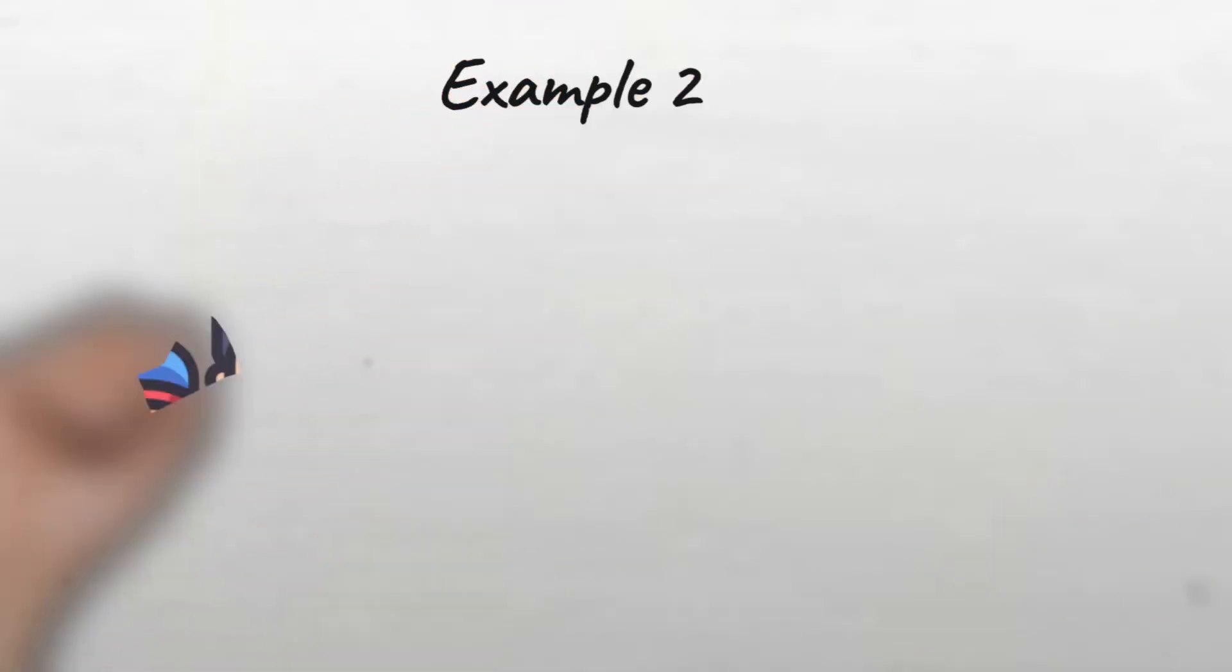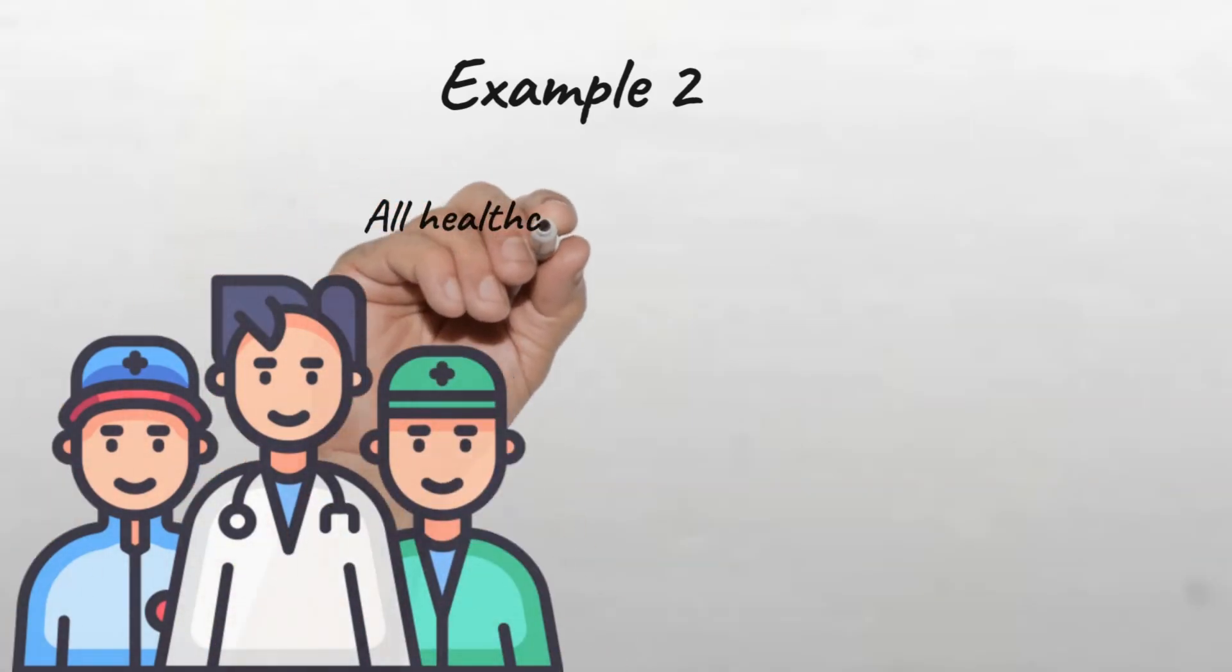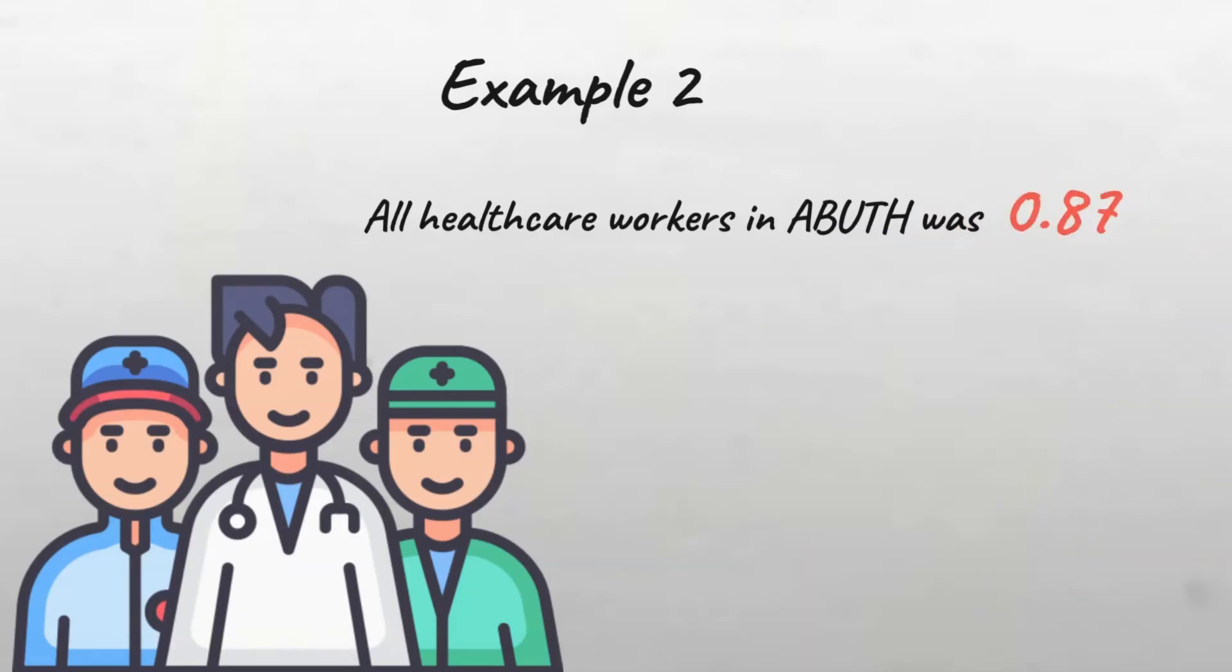Let's try another example. The proportion of health workers that have taken the IPC training course among all healthcare workers in ABUTH was 0.87. Is this proportion a statistic or a parameter?